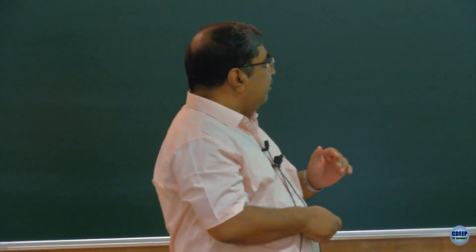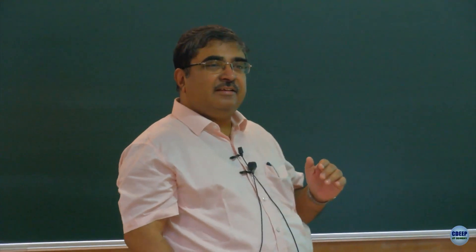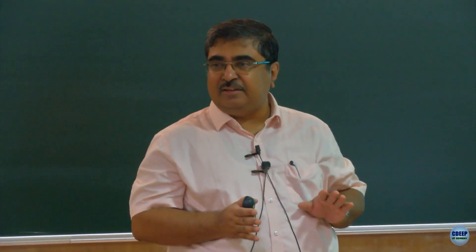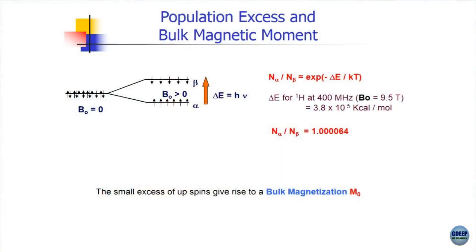It is not very difficult to understand that for this small energy gap, the higher energy level (beta spin) will also have significant population. A simple calculation for a 400 MHz machine: B0 is 9.5 Tesla, ΔE is about 3.8 × 10⁻⁵ kilocalorie per mole, so Nα/Nβ = 1.000064.